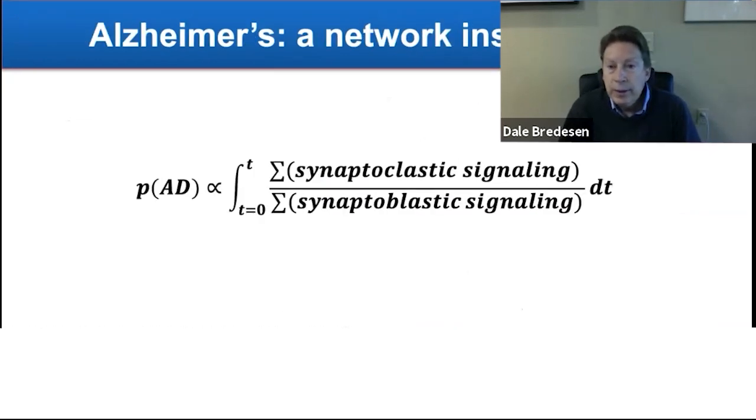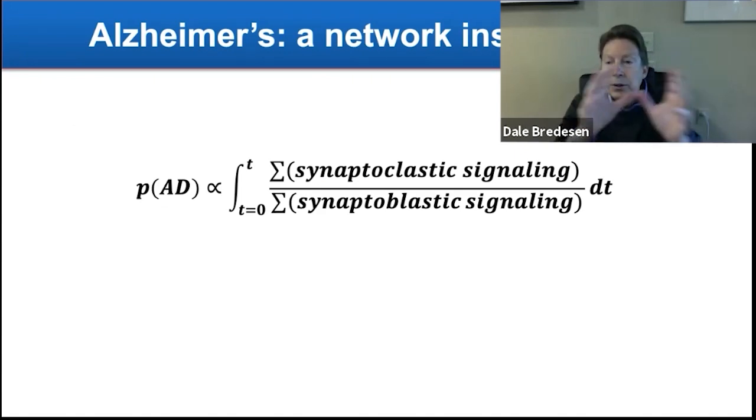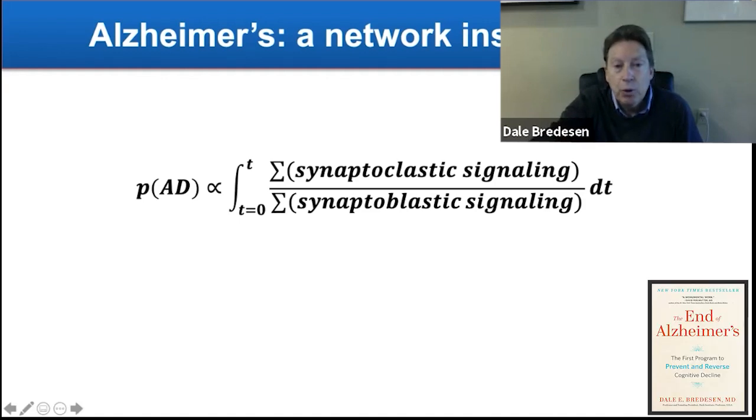We can look at this as a network insufficiency. You have these different subsystems within your brain, and one of them is very important for plasticity, neuroplasticity. This particular system has a whole set of things that are synaptoblastic and synaptoclastic. So your probability of getting Alzheimer's, which is what I'm expressing here, is proportional to the integration over time of what happens to you.